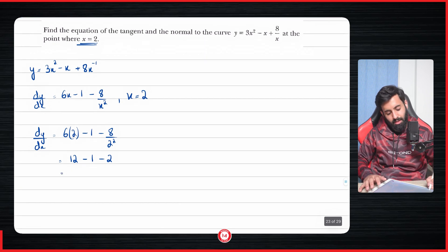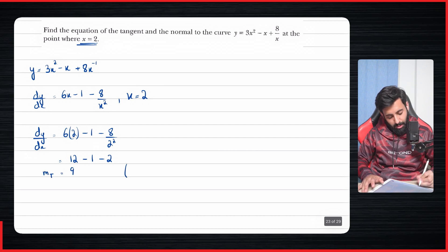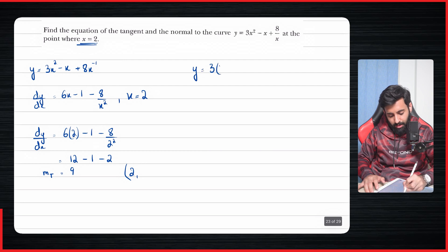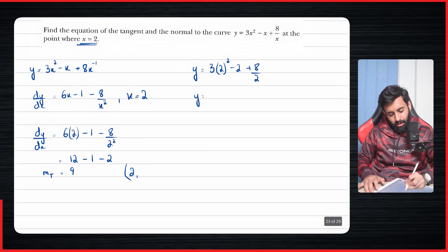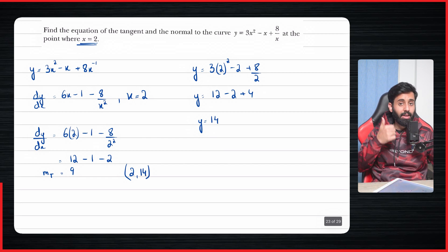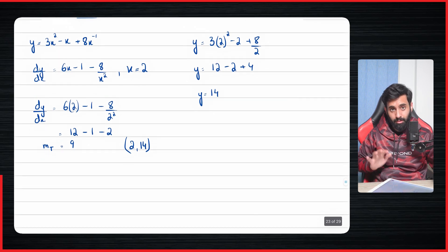So the gradient of the tangent is 12 − 1 − 2 = 9. Now we need the y-coordinate. Plugging x = 2 into the original equation: 3(4) − 1 + 8/2 = 12 − 1 + 4 = ... wait, that gives y = 14. So now we have gradient = 9 and point (2, 14), meaning both boxes are checked.